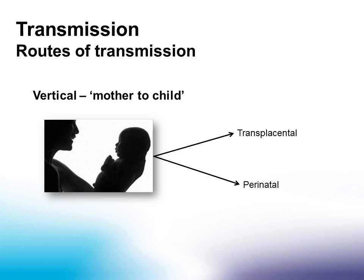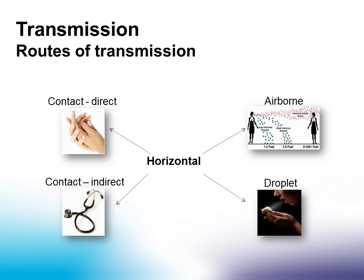Routes of transmission can be grouped as vertical or horizontal. Vertical transmission of organisms occurs from mother to child, either via the placenta before the baby is born, or perinatally through direct contact with blood or body fluids. The most common method of horizontal transmission is by direct or indirect contact. Transmission can also occur via airborne particles that drift in the air, or droplets that can travel up to one metre.